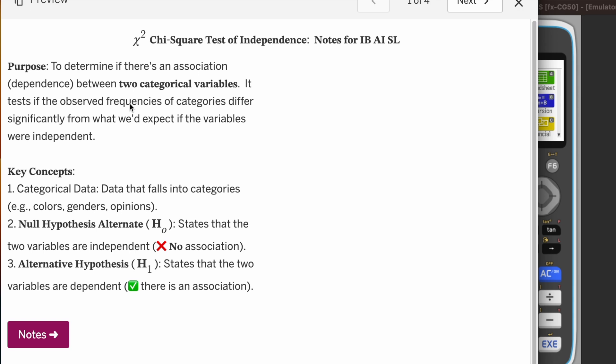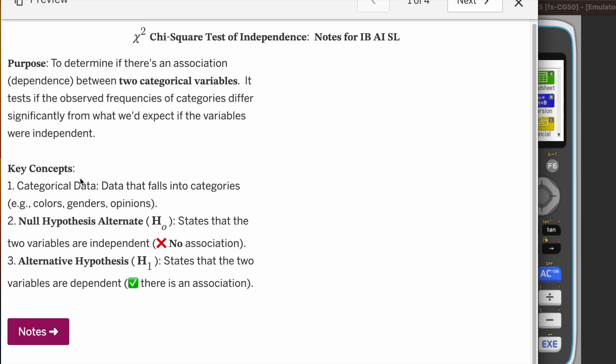Most of the time you will be given a table. Some key concepts: you have two categorical data points. Then you have to come up with the null and alternate hypothesis.